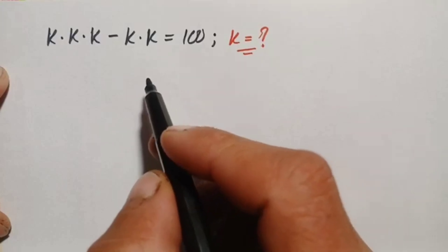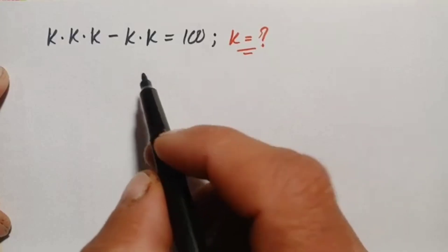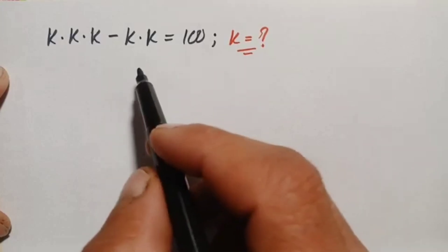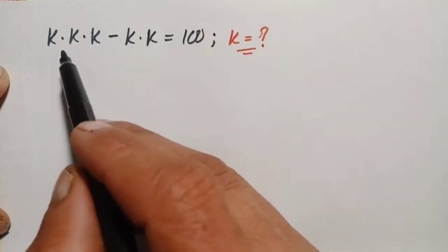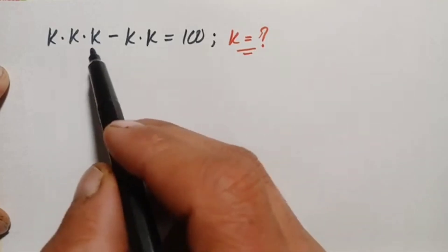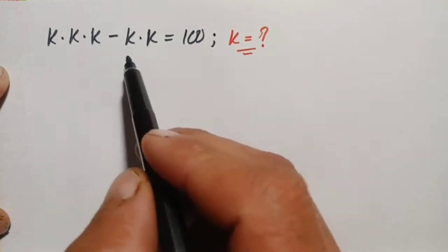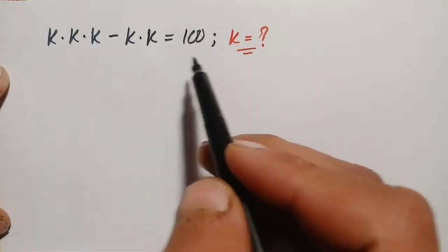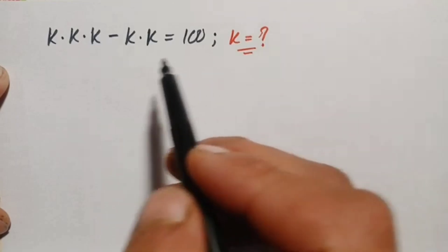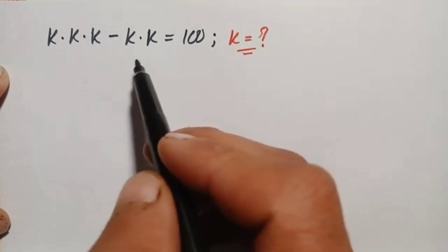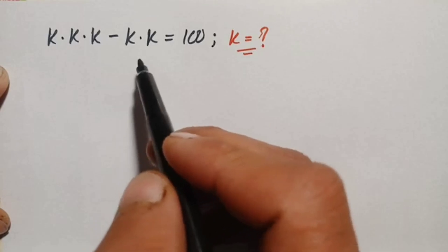Hello everyone, you are welcome. We will solve this interesting algebra math problem: k times k times k minus k times k is equal to 100. We will try to find out the value of k — specifically all the roots of this equation.